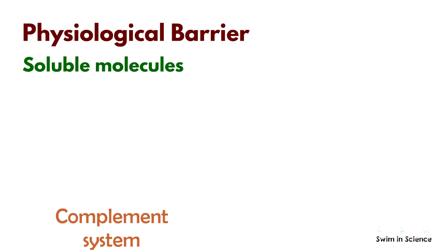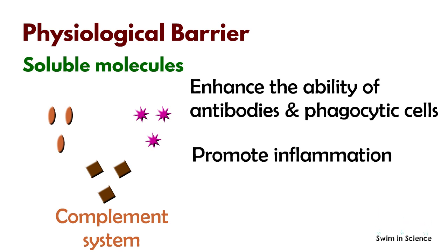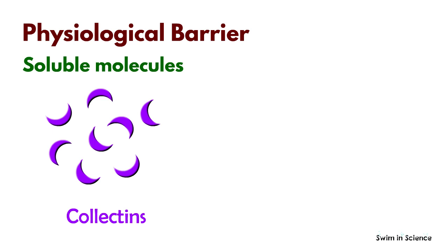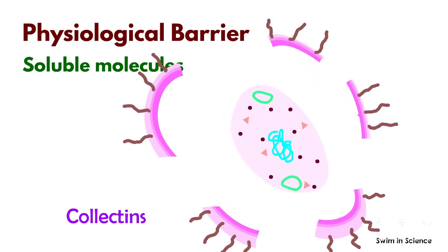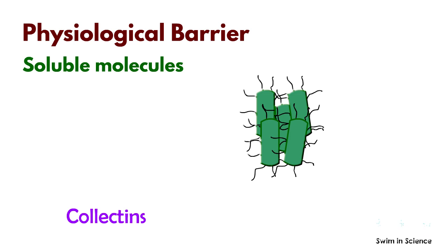The complement system consists of a group of serum proteins. These proteins enhance the ability of antibodies and phagocytic cells to clear microbes and damaged cells from an organism, promote inflammation, and attack the pathogen's cell membrane. Collectins, or collagen-containing C-type lectins, are soluble surfactant proteins that may kill certain bacteria directly by disrupting their lipid membranes, or alternatively by aggregating the bacteria to enhance their susceptibility to phagocytosis.